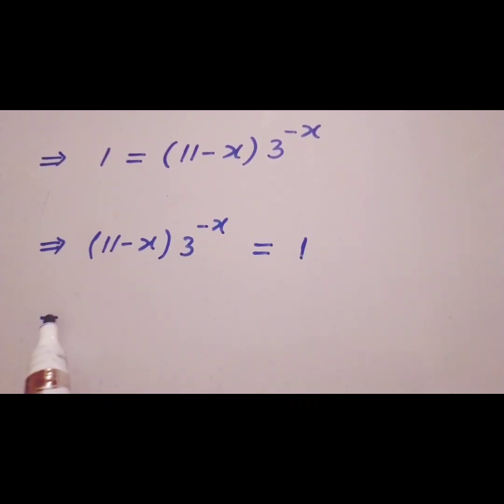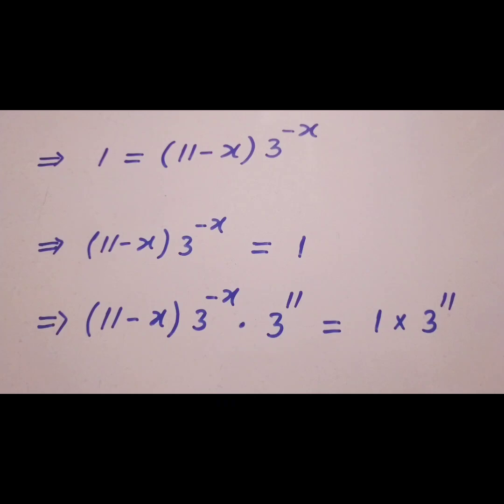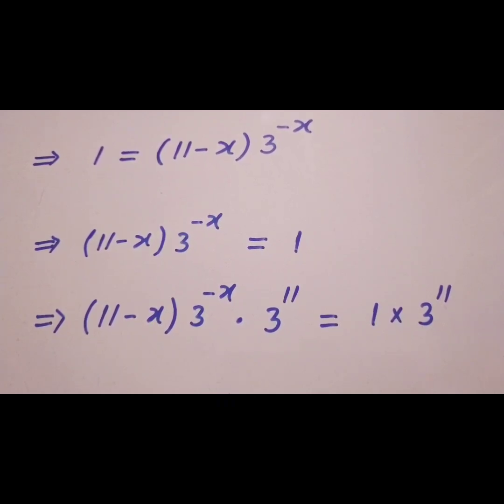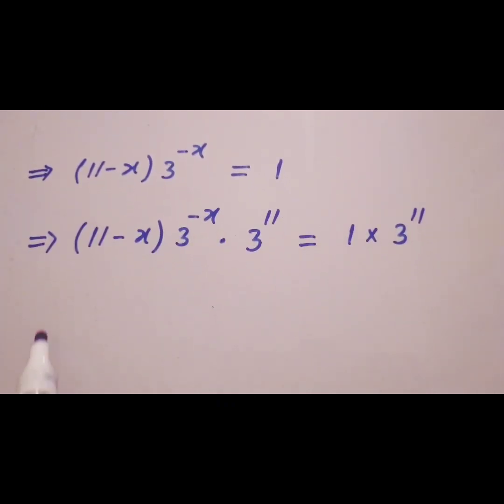(11 - x) × 3^(-x) × 3^11 = 1 × 3^11. We have multiplied both sides by 3^11.